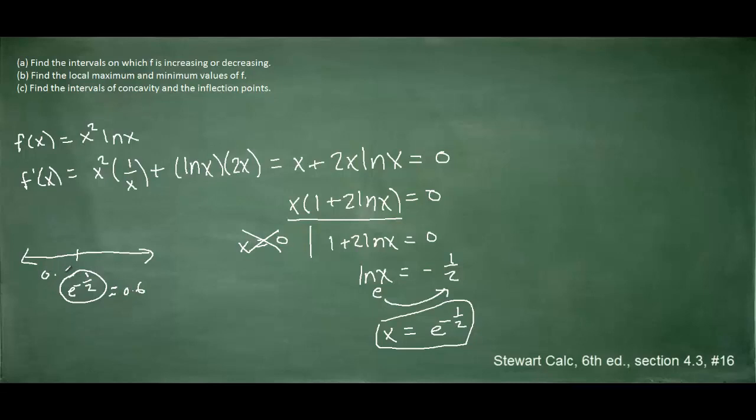We'll plug 0.5 into our derivative — you can use your calculator — which is x plus 2x times the natural log of x. If you plug 0.5 into the derivative, you should get a negative result. It doesn't matter what the specific value is; we're only looking for whether it's negative or positive. Similarly, if you plug 1 into the derivative, you should obtain a positive result.